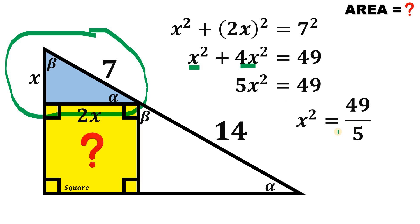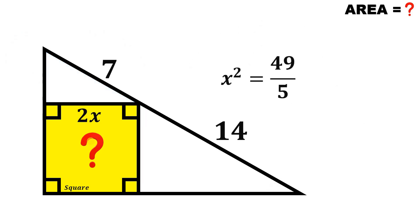Now take note that the goal is not to find the value of x but to find the area of our square. So now let's focus on this. And since we want to find the area of this yellow square, we know how to find the area of a square which is the length of the side raised to the power of 2 or simply 2x raised to the power of 2.